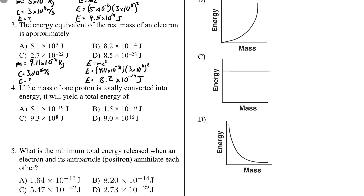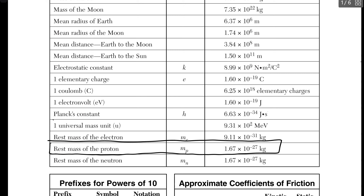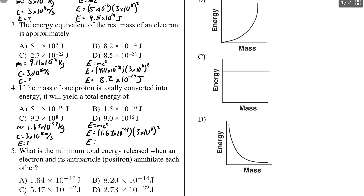Number four: if you take the mass of one proton and convert it into energy, what will it yield? From the reference table, right underneath the electron, the mass of a proton is 1.67 times 10 to the negative 27 kilograms. Plugging that into E equals MC squared, since it's a larger mass we expect more energy — and we get 1.5 times 10 to the negative 10 joules. Still not a whole lot, but larger than before.